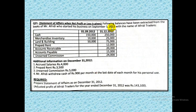This is the question in front of us — these are the balances of Mr. Afridi. He started his business on September 1; the date of starting the business is always important. His year ends on December 31. These are the details regarding his assets and liabilities on September 1, that is the beginning of the business, and on 31st December, that is the end.